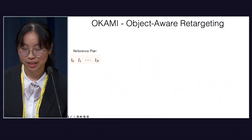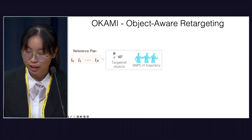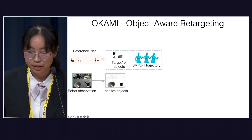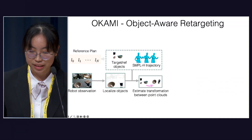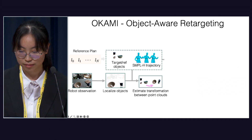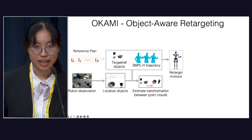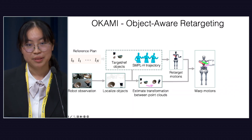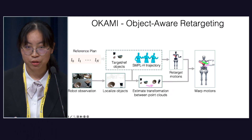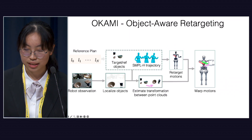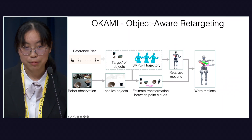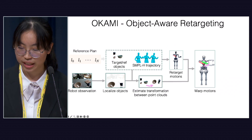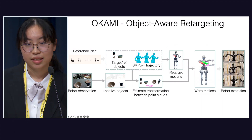In stage two, we introduce a novel process called object-aware retargeting. To execute each step, we retrieve the target and reference objects and the SMPL-H trajectory from the reference plan. We then localize object locations at test time using Grounded SAM and estimate the transformation between point clouds to compute the goal pose of the target object. We also retarget the SMPL-H trajectory onto the humanoid robot using a factorized process that separates retargeting of arms and hands. For the arm, we warp the human trajectory according to the current pose and computed goal pose of the target object — warping bends the trajectory so the robot arm reaches objects in new positions while maintaining overall trajectory curvature. We use inverse kinematics to compute joint configurations. For the hands, we use a package called dexterous retargeting to compute finger joints, then send commands to the real robot for execution.